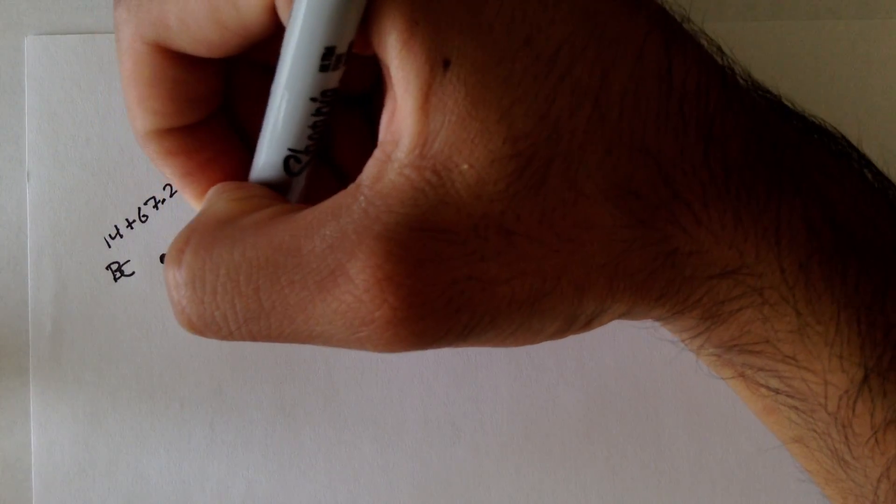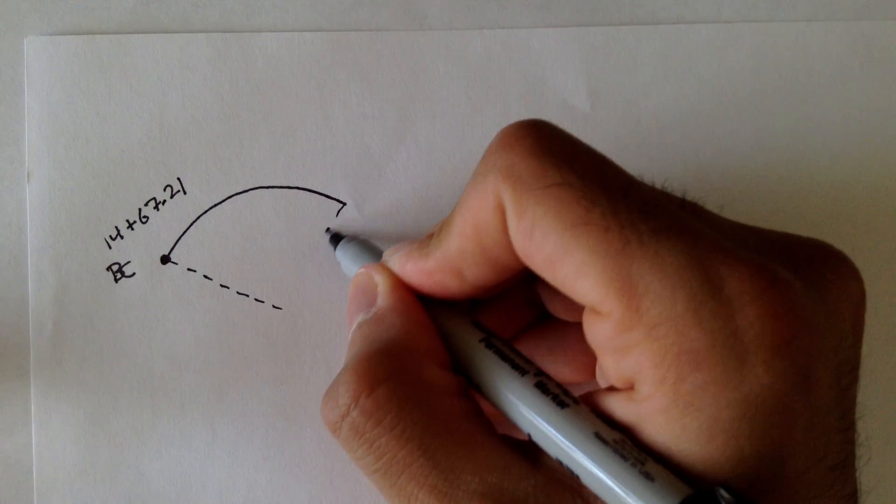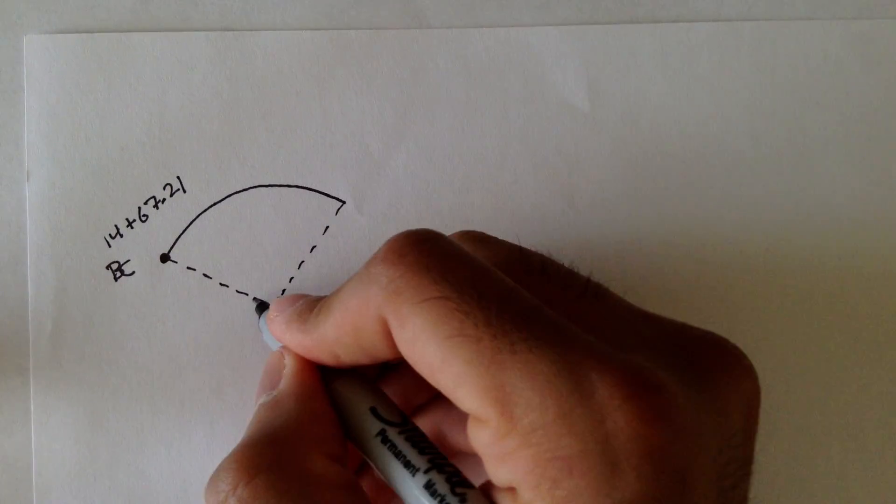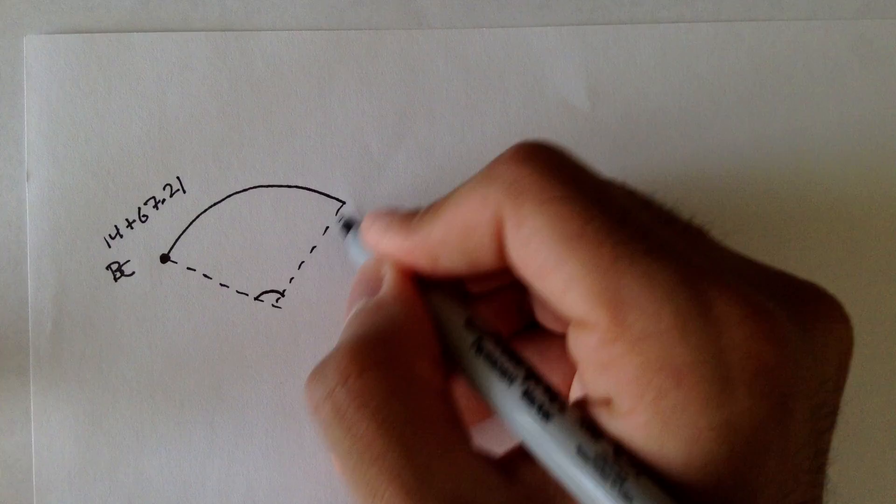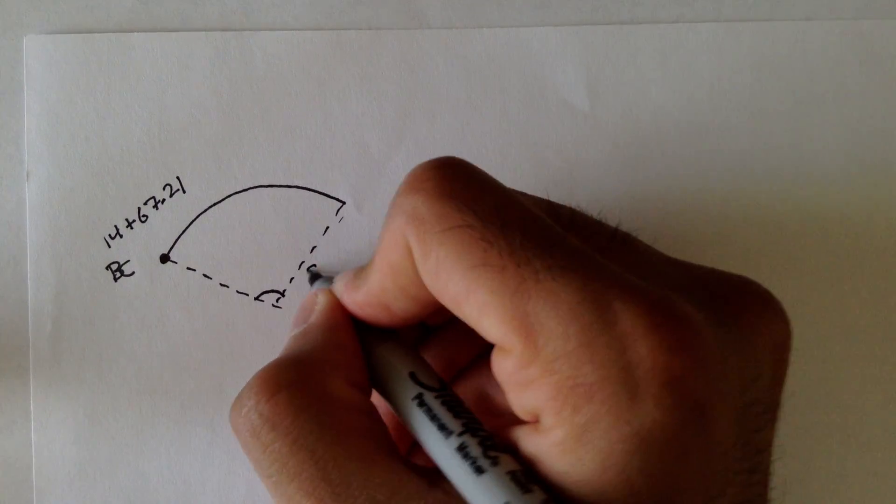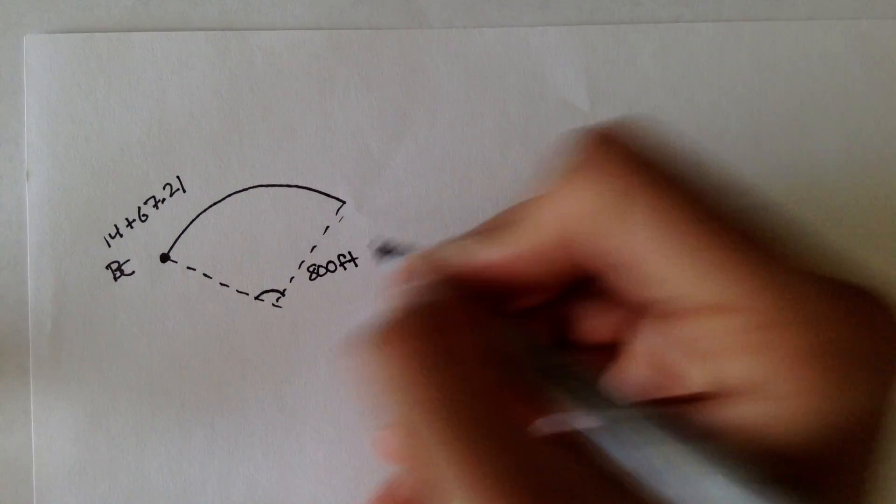BC stands for beginning of curve. And we have some other information, the radius of this curve, so the radius here, this distance, the radius is 800 feet.